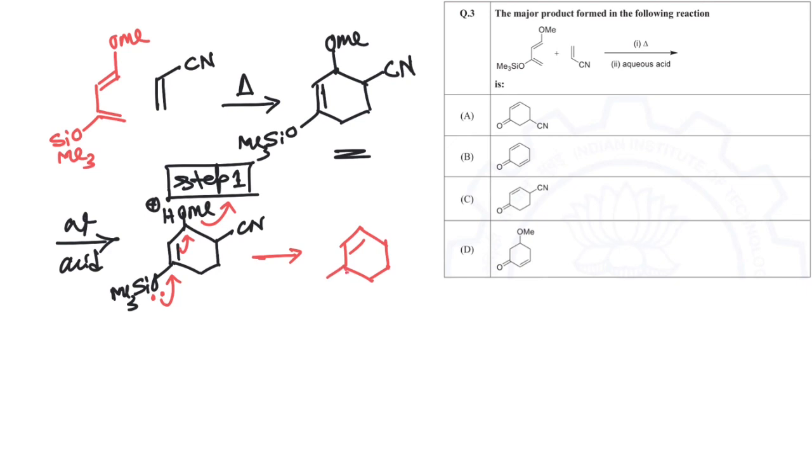Now if you look at this intermediate, oxygen is carrying a positive charge, so silicon becomes electrophilic, right?